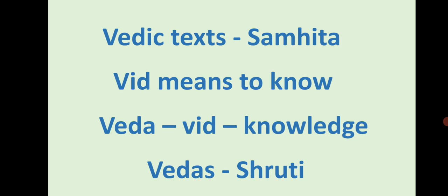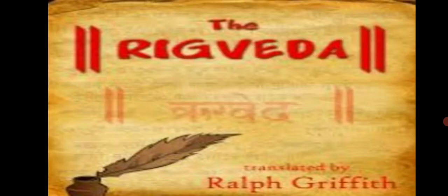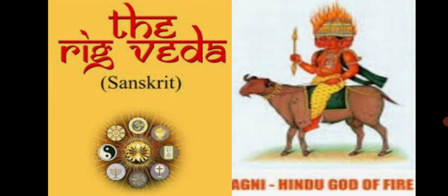Each verse of the Veda is known as a Richa, so the Veda consisting of Richas is called Rig Veda. Richa means a verse composed to praise a deity. When a number of Richas are put together to praise a particular deity, the poetic composition is called a Sukta. The Rig Veda consists of many Suktas composed to praise different deities.